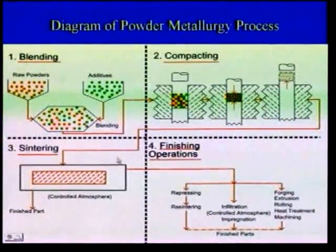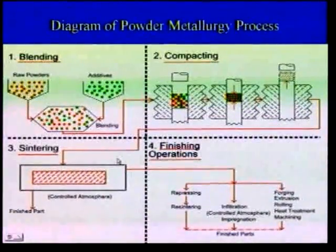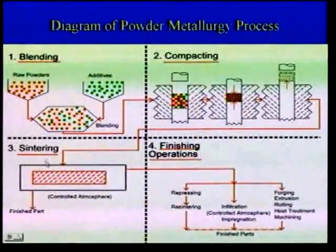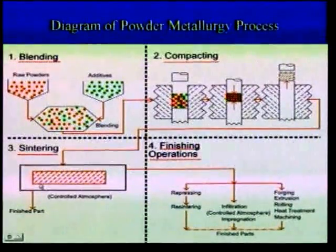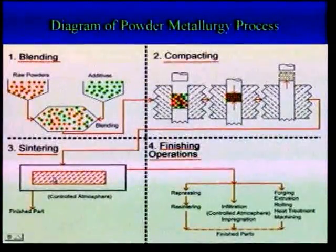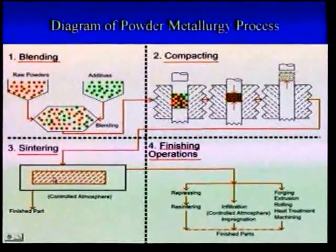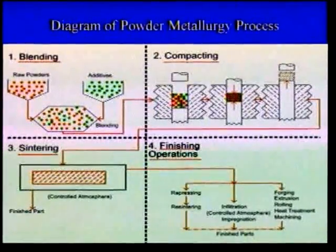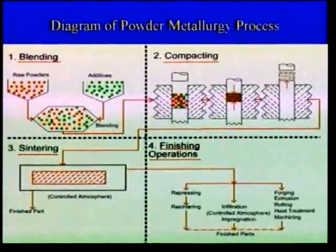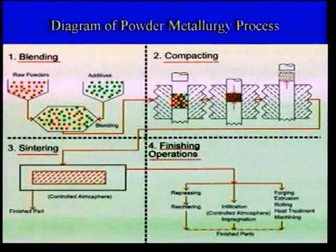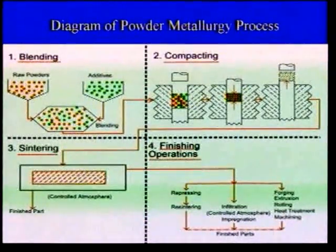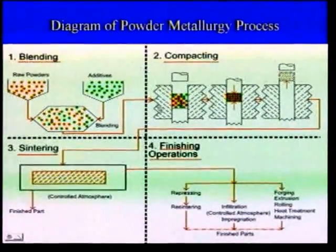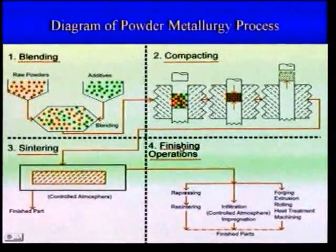After shape is obtained, this is not suitable for regular application because it has less strength. This is called a green compact. This green compact is to be given strength to meet real applications, so sintering is to be carried out. Sintering is nothing but heating the green compact in a controlled atmosphere, also called a protective atmosphere. Because if the green compact is heated in open atmosphere, it is subjected to oxidation and metal oxides will form, which will reduce the strength of the green compact. So the green compact is heated under the controlled atmosphere. After sintering, finishing operations are to be carried out, also called supplemental operations.